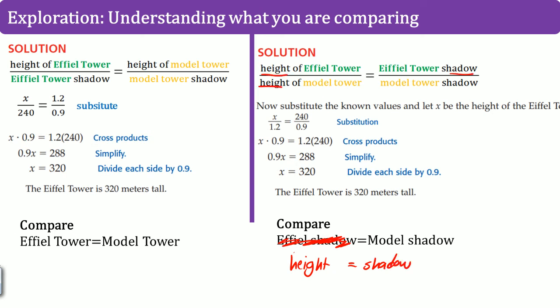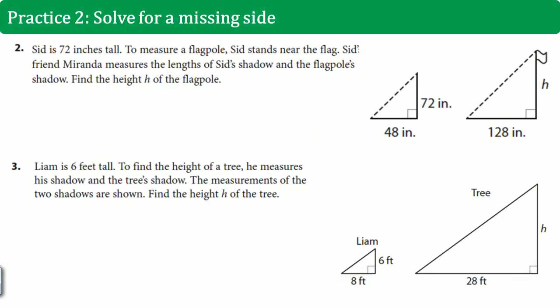Height equals to shadow shadow. Here, I went Eiffel Tower over Eiffel Tower. It went model over model. So it doesn't matter how we set up our ratio. You should still get the same sort of answer. As long as they're consistent.